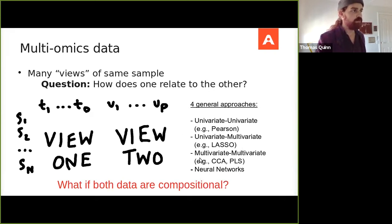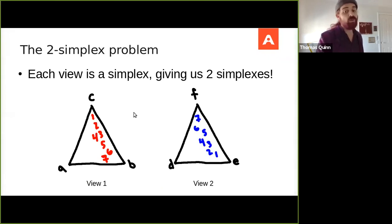Now, regardless of which of these approaches you take, we should be asking ourselves the question, what happens when both of the data are compositional? What I mean by that is each of the data sets is in its own right a simplex. And so we now have two simplexes and we need to do some integrative analysis between the two simplexes.